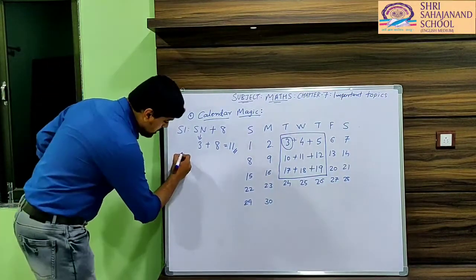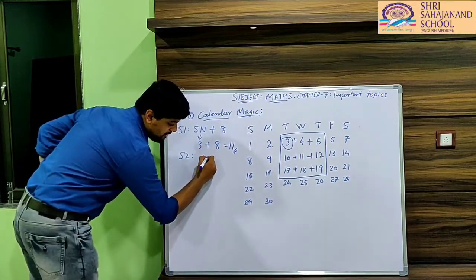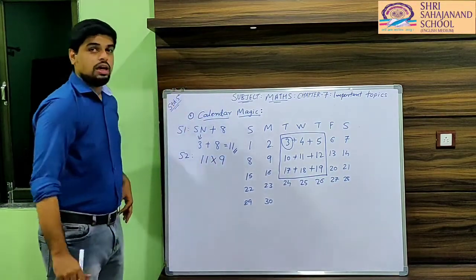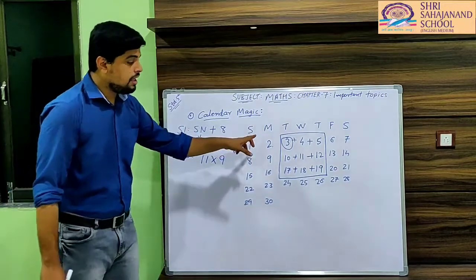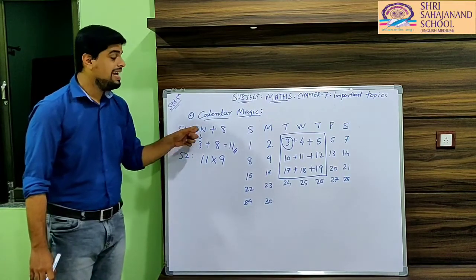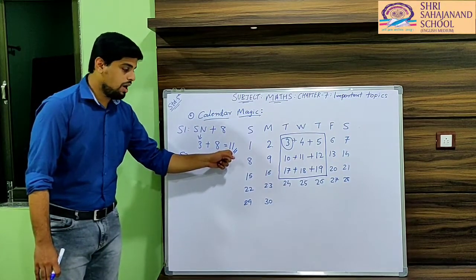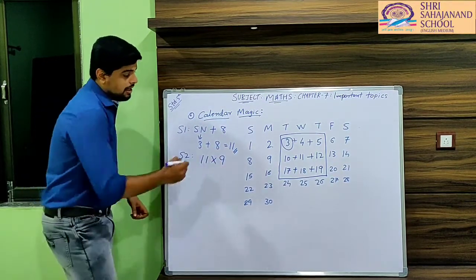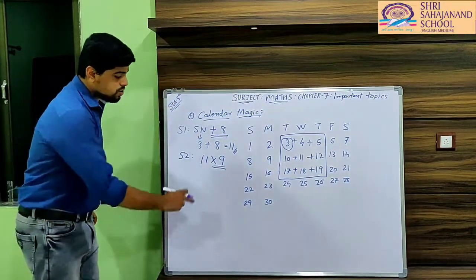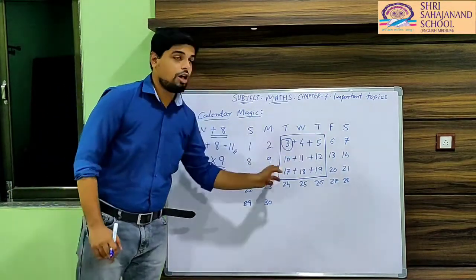In step 2, they are telling us to multiply this result by 9. So 11 multiplied by 9. In every case, if you take any 9 numbers, in the first step you take the smallest number and add 8 to it, and in the second step, whatever result you get, you multiply it by 9. So in our case, 11 times 9 gives us 99, which will be the sum of all these numbers.